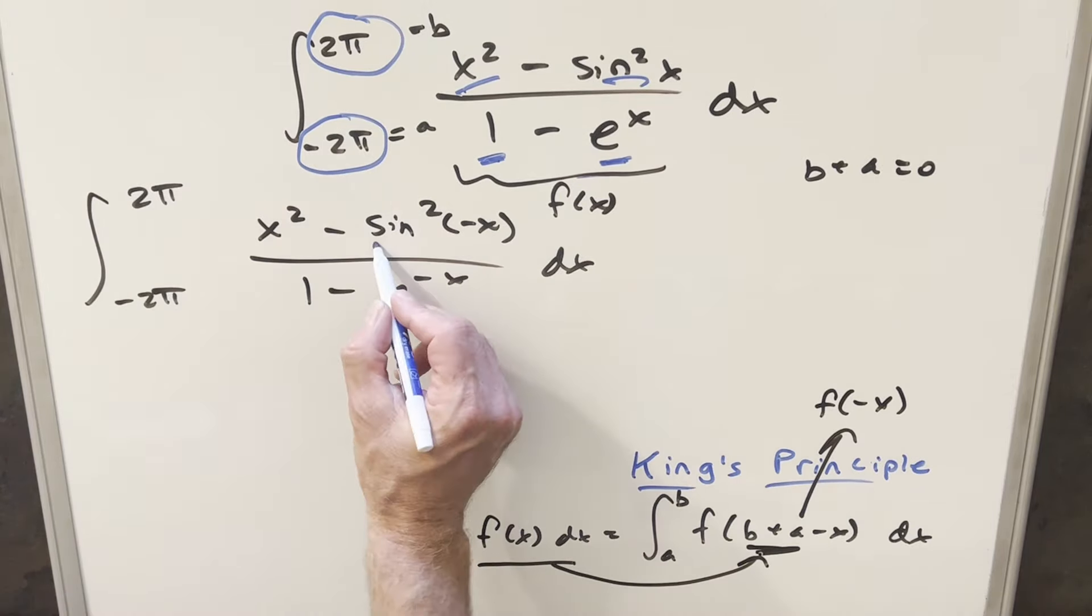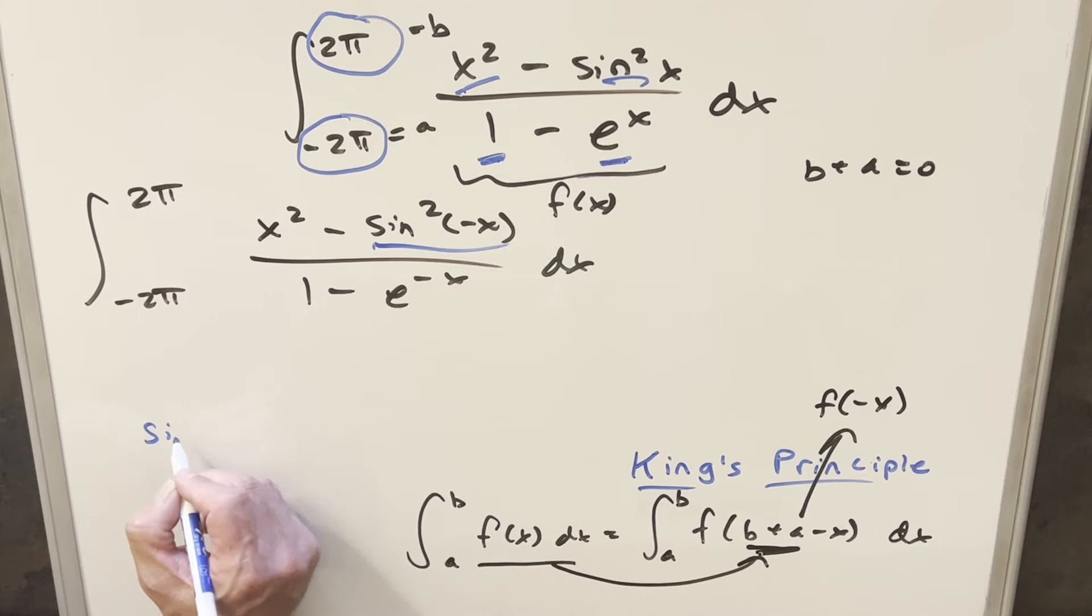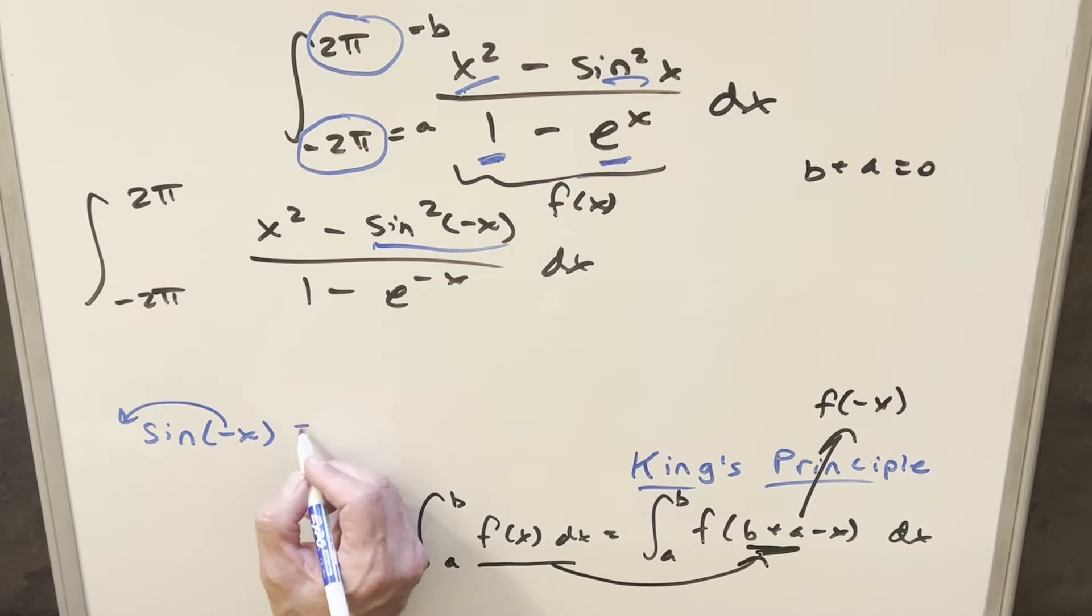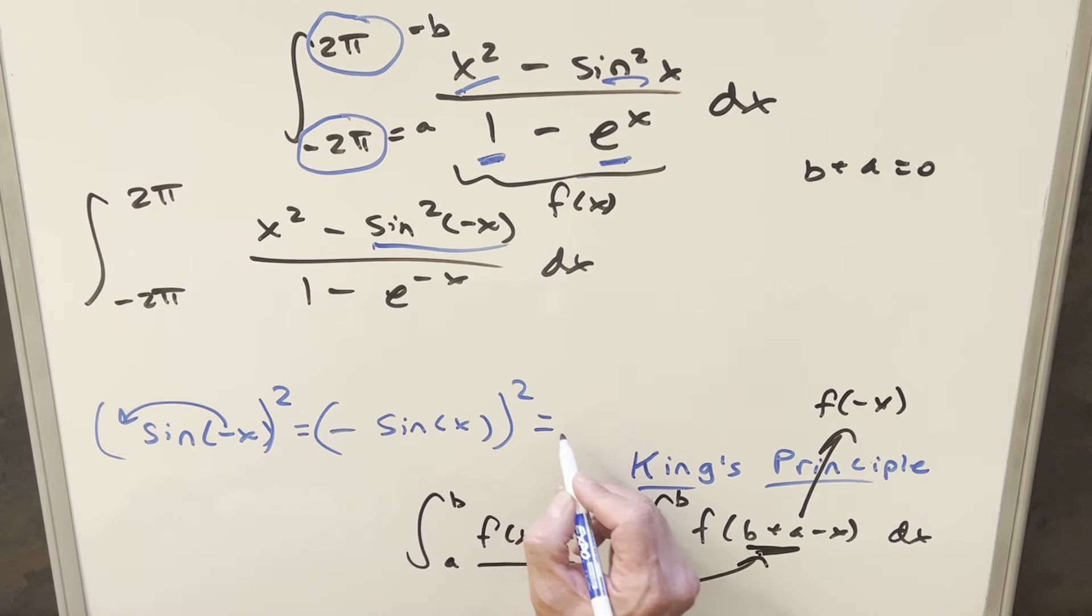But then let's just see what happens here on this sin(-x). Now, the key thing with this is sine is an odd function. So that allows us to take the minus sign out front, and we can write this as -sin(x). But then just notice the whole thing's squared. So this whole thing's squared. And when we do that, the minus becomes a plus. And this just becomes sin²x.